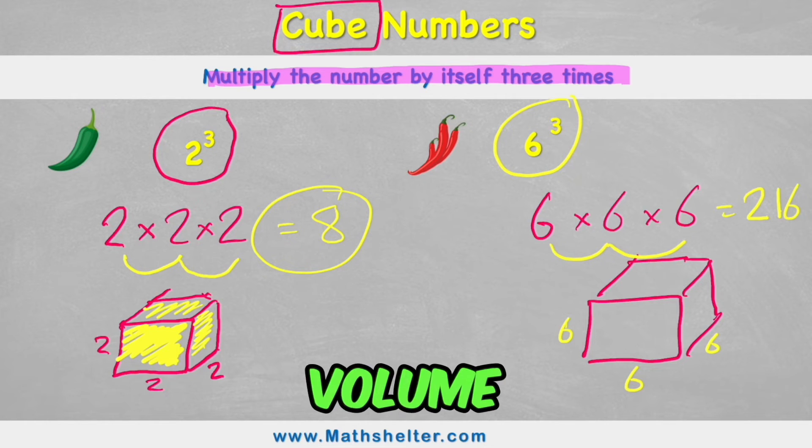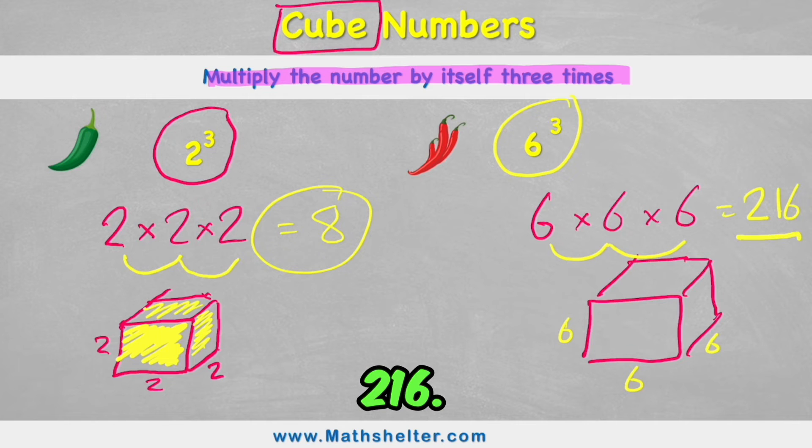Or in other words, the volume of a cube whose lengths are six is 216, whatever units you're using, centimetres cubed or metres cubed or whatever.